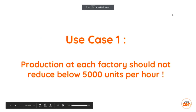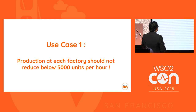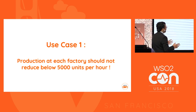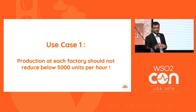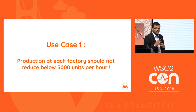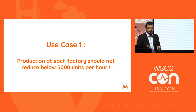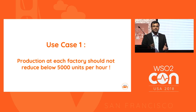The first use case I'm going to discuss is about the sweet production factory. The first rule is: production at each factory should not reduce below 5,000 units per hour. If production drops below 5,000 units per hour, we need to send an alert to the manager saying production is reducing - go check, something is wrong.